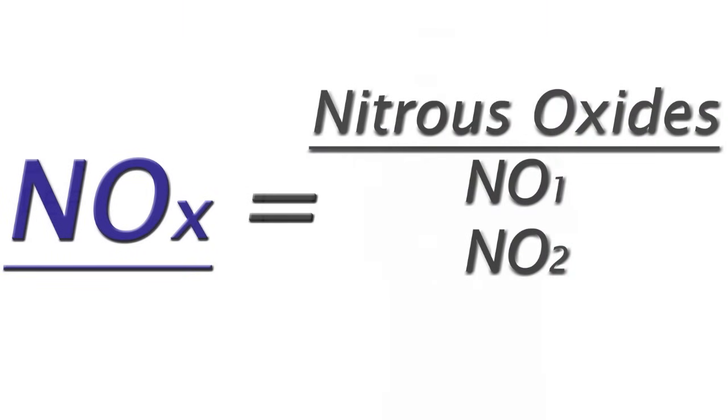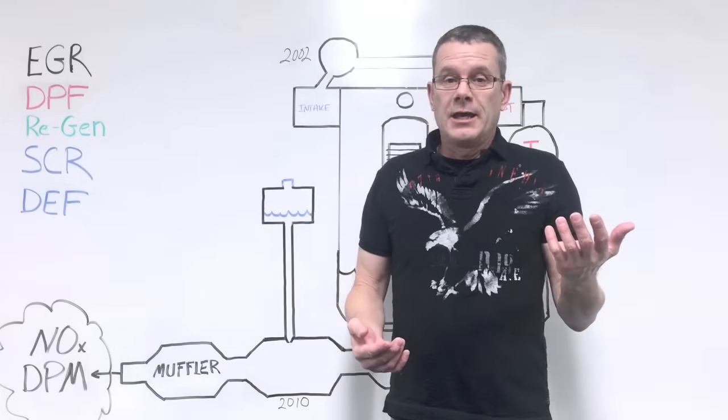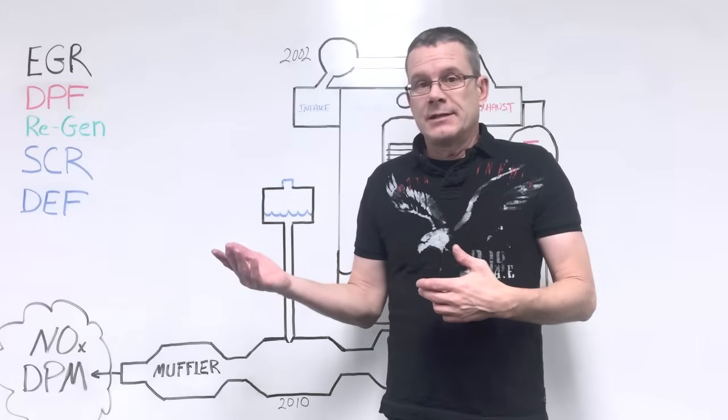There's NO and NO2. Nitrous oxide gases are formed in the combustion chamber, and the hotter the combustion in the engine, the more nitrous oxides that are created.